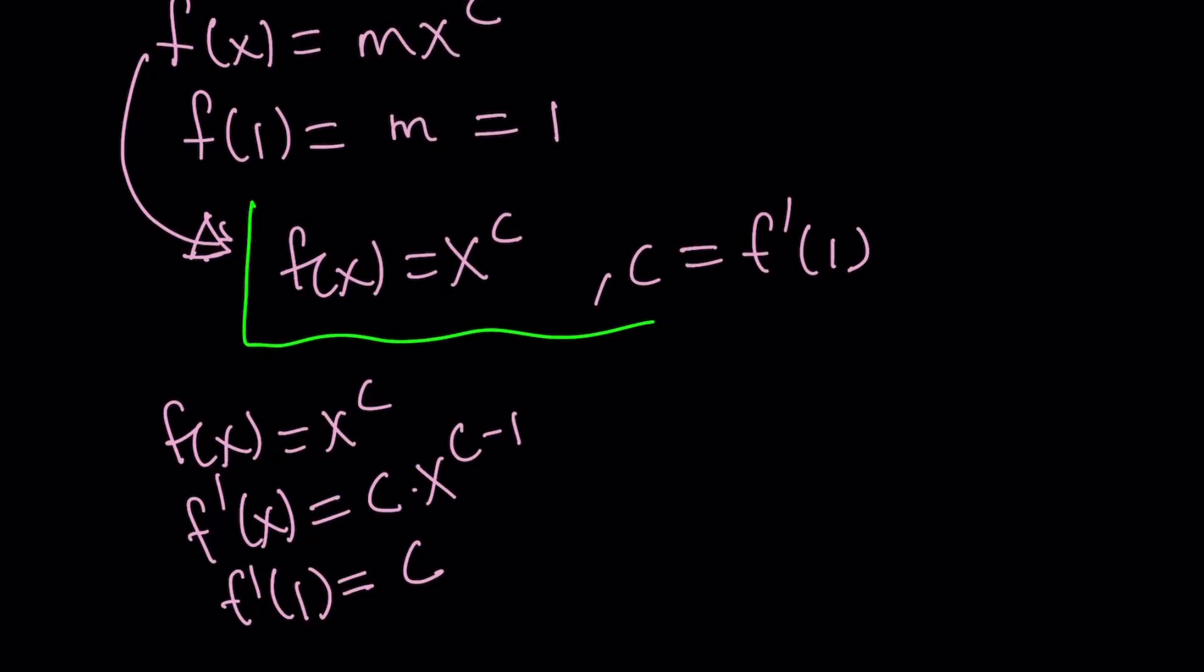But let's check. If f of x equals x to the power c, if you differentiate f of x, you get c times x to the power c minus 1. If you replace x with 1 in the derivative, you get c, which is what we are claiming. This brings us to the end. Thank you for watching. I hope you enjoyed it. Don't forget to comment, like, and subscribe. I'll see you tomorrow with another video. Until then, be safe. Take care and bye-bye.